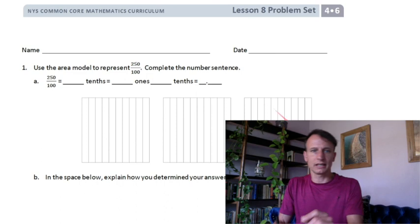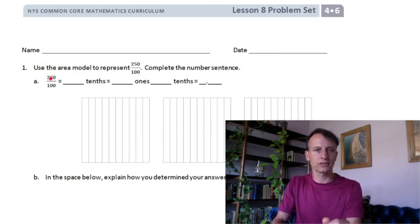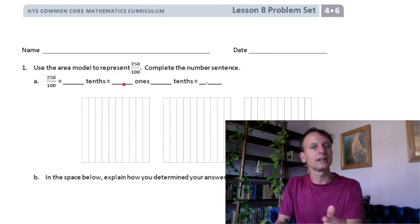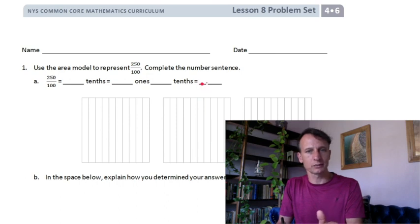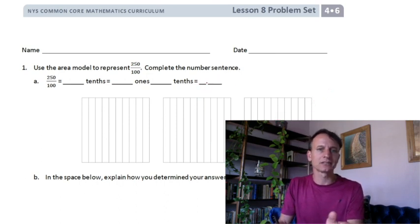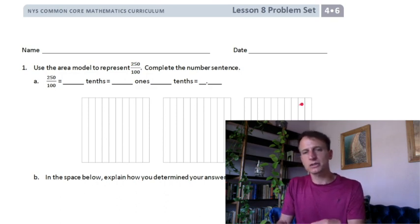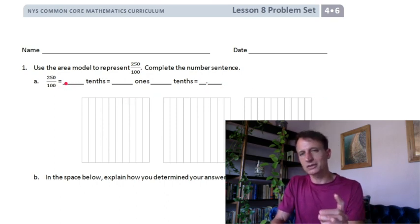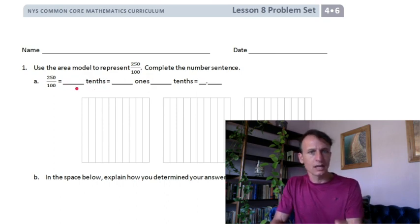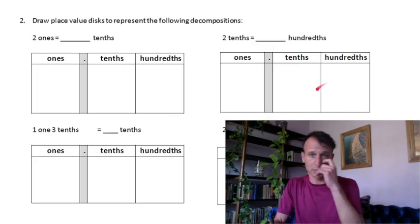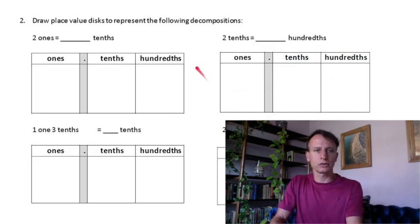Now you have the problem set. You're working with 250 hundredths — notice how many tenths that is, then how many ones and tenths, and write it as a decimal. For the explanation of how you got Part A, keep it simple: relate tenths to hundredths. Say 'I looked at how many tenths there were, then decomposed that into ones and tenths' — explain it in those terms.